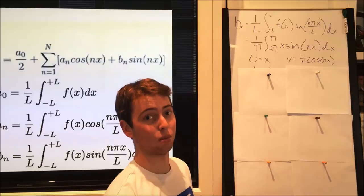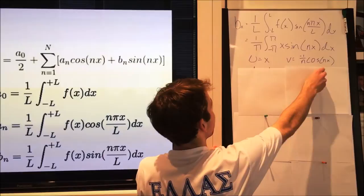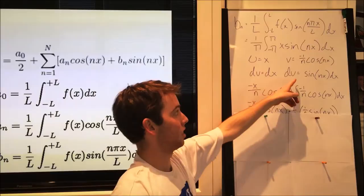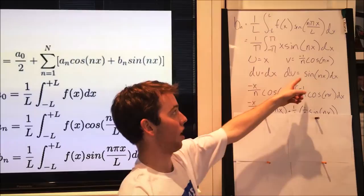Then we used u sub, or integration by parts, to solve the integral. We put u equal to x and dv equal to sine of nx dx. The integral of x is dx,